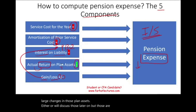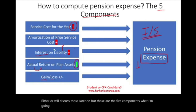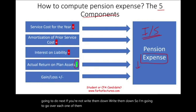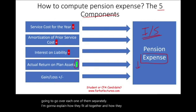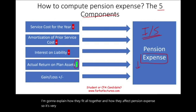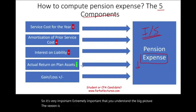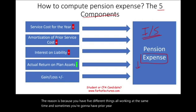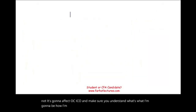I'm going to go over each component separately and explain how they fit together and how they affect pension expense. It's extremely important that you understand the big picture, because you have five different things all working at the same time. Sometimes you'll have prior year balances, sometimes you may not, and it's going to affect OCI.